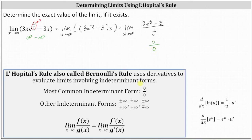Recall L'Hôpital's rule states: the limit as x approaches c of f(x) divided by g(x) equals the limit as x approaches c of f′(x) divided by g′(x). To apply L'Hôpital's rule, once we have the correct indeterminate form, we differentiate the numerator and denominator. This is not to be confused with the quotient rule.